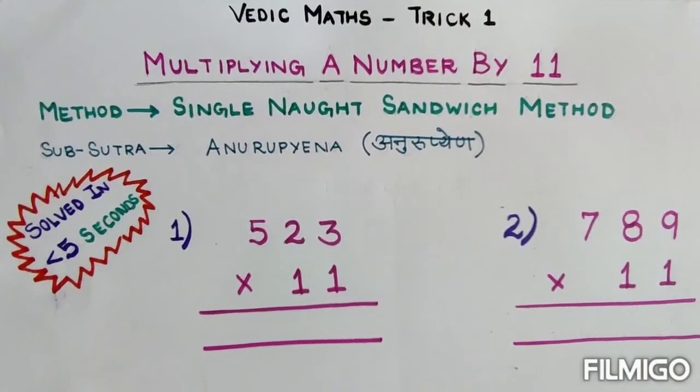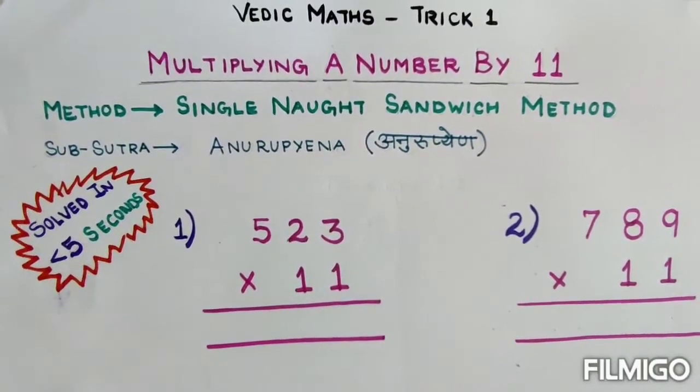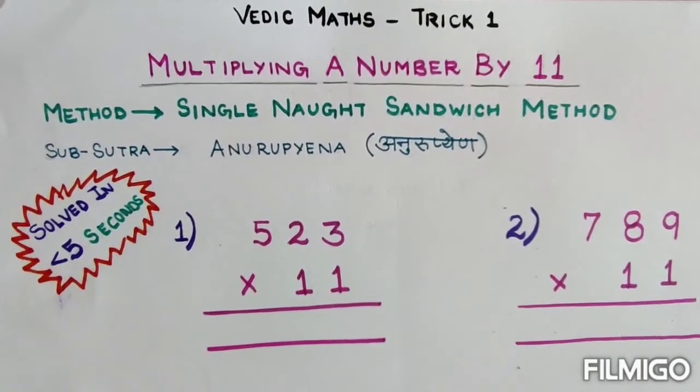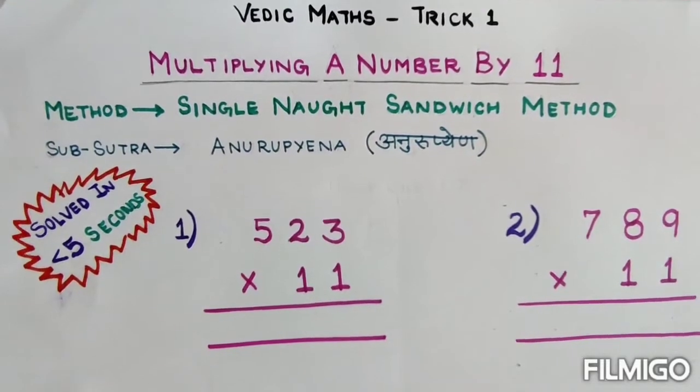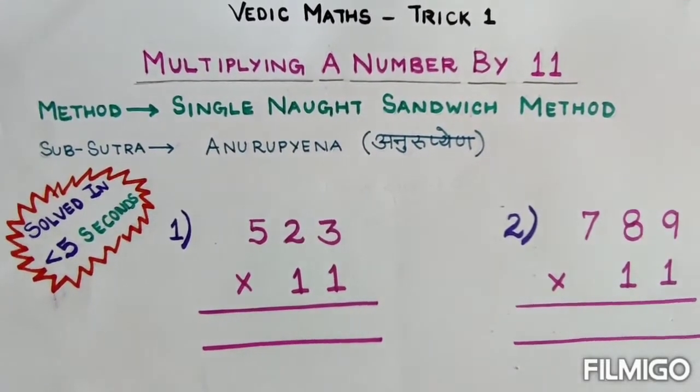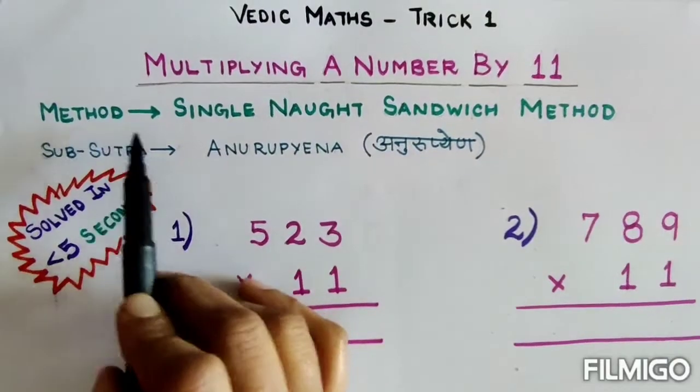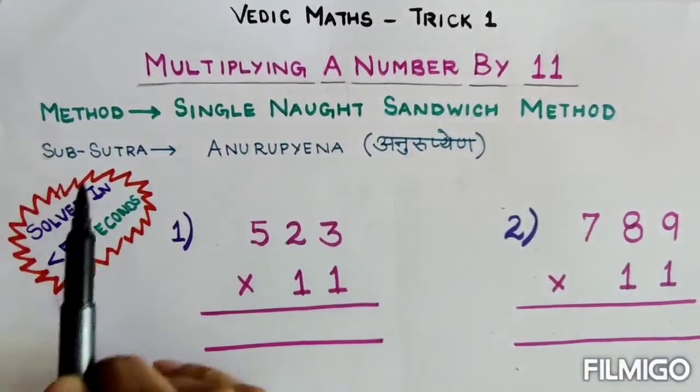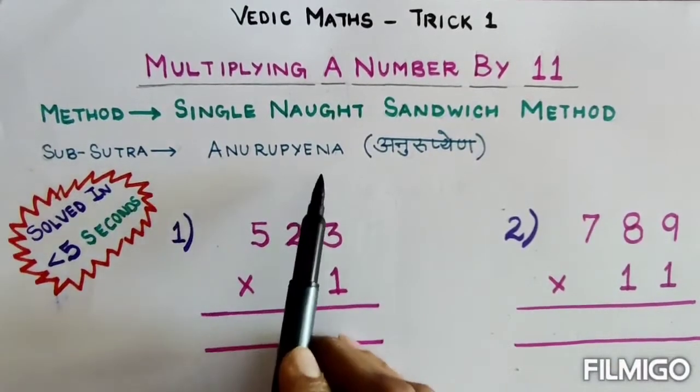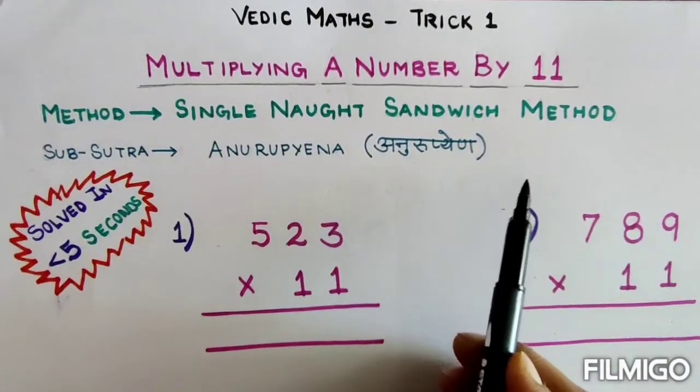Hi friends, I welcome you to my channel Profound Wisdom Academy. Today's topic in Vedic Maths is multiplying a number by 11. The method we use is the Single Naught Sandwich Method, and the sub-sutra we use is Anurupena, which means proportionately.